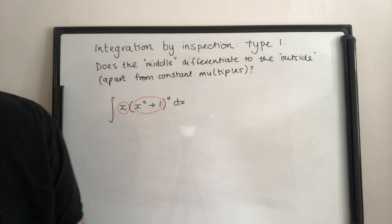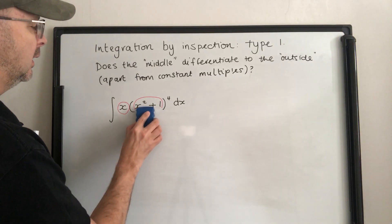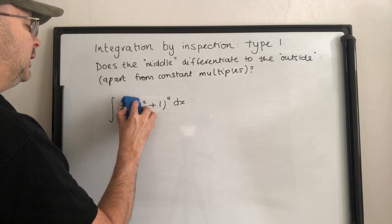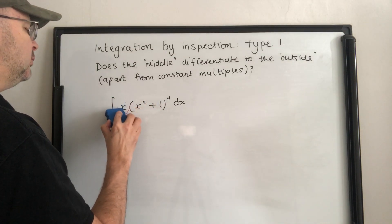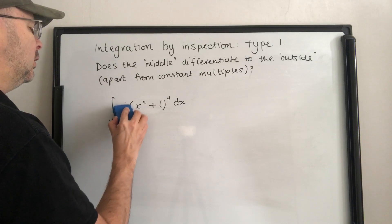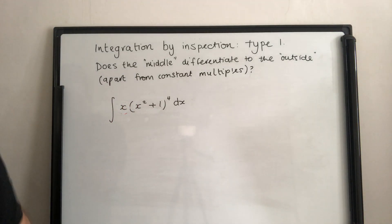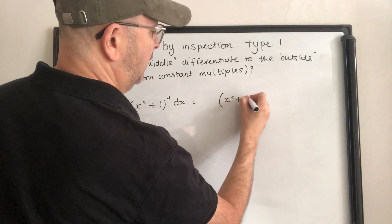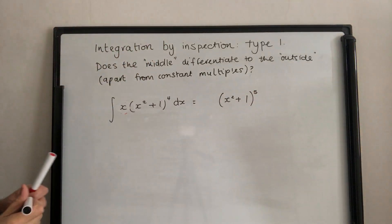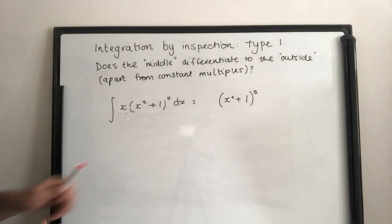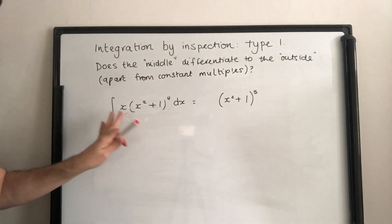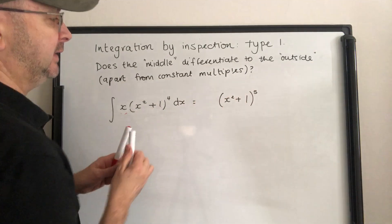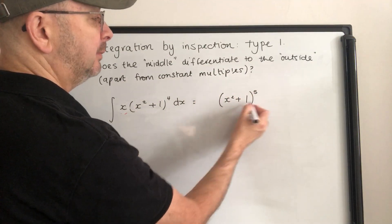What we do is think: ignoring the outside, what sort of thing would differentiate to that? Well, what would differentiate to it would be x squared plus 1 to the power of 5. Once we've written that down, all we've got to do is adjust. The 5 will come down the front when differentiating, giving us 5 times something to the power of 4.